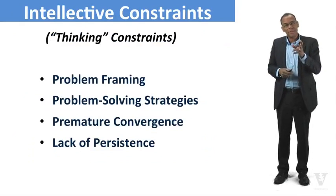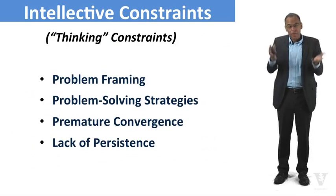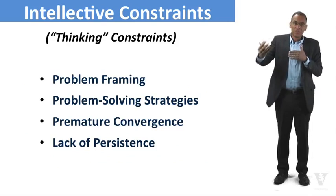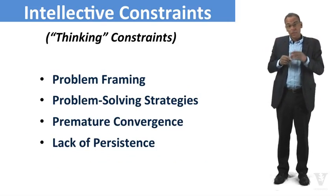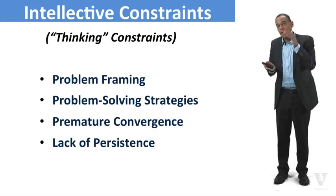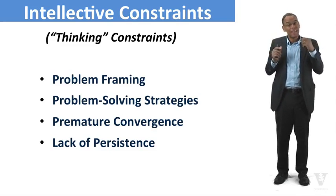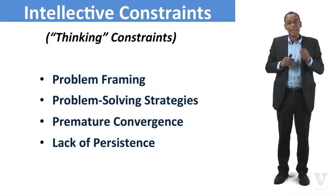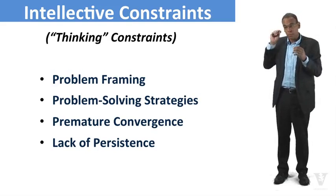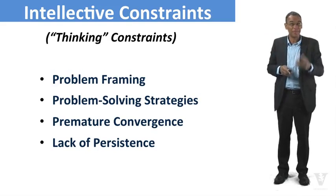These are the kinds of intellectual constraints we talked about: problem-solving constraints. How do we frame the problem? What strategies do we use to approach it? Do we avoid premature convergence — staying open to other possible solutions? And do we persist — finding ten different ways to solve the problem and choosing the best among them, instead of having only one arrow in our quiver? We want to have as many different ways as possible.